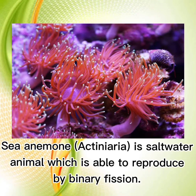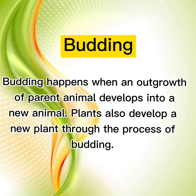The sea anemone, Actinia, is a saltwater animal which is able to reproduce by binary fission. Budding happens when an outgrowth of a parent animal develops into a new animal.